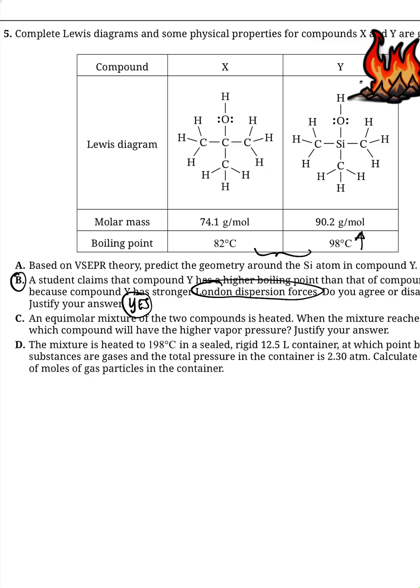So if we look at these Lewis structures, the only difference between X and Y is the central atom. In X, I've got a carbon in the middle, and in Y, I've got a silicon in the middle.